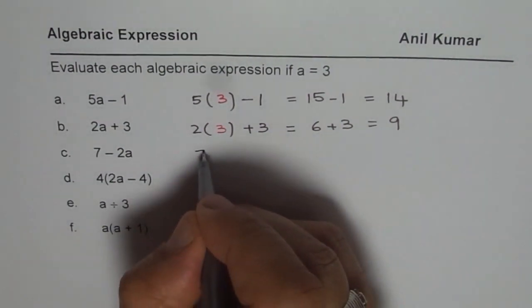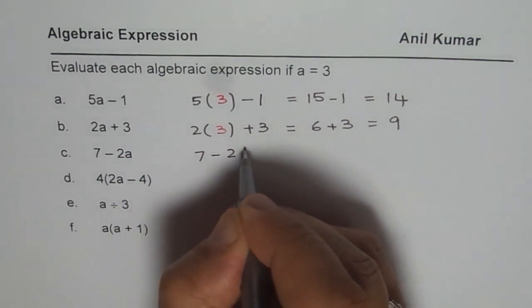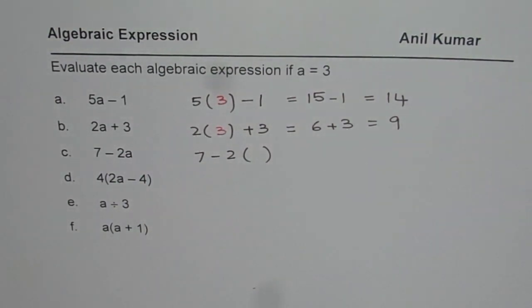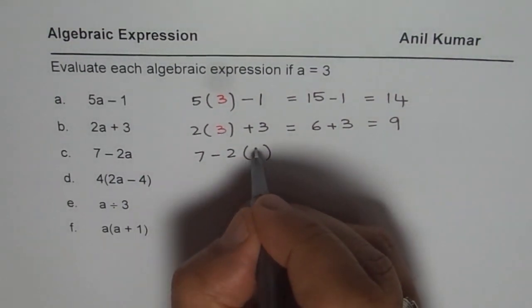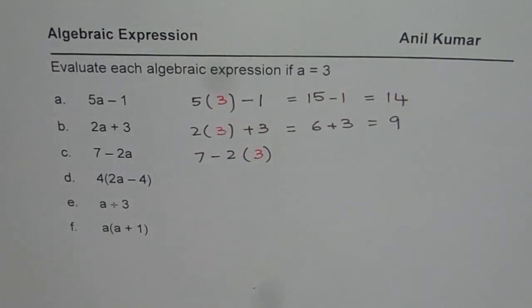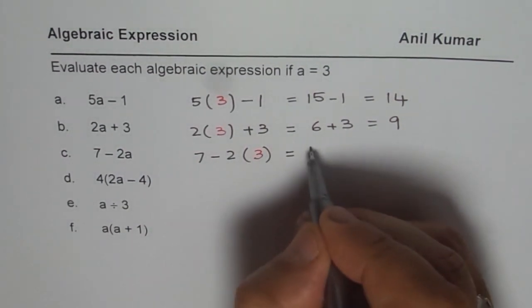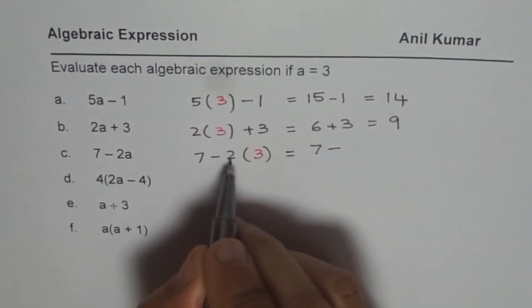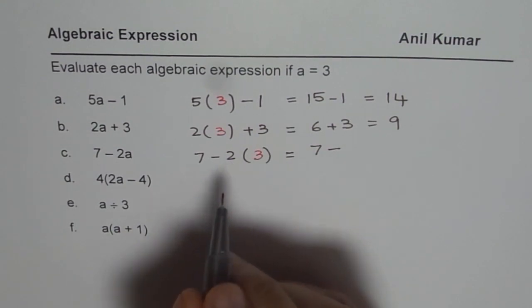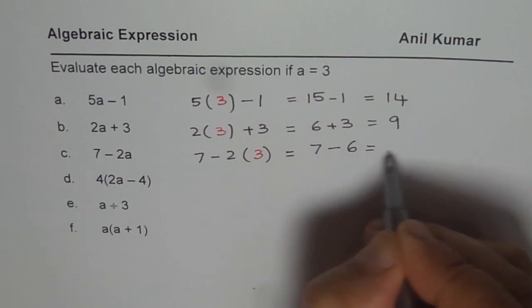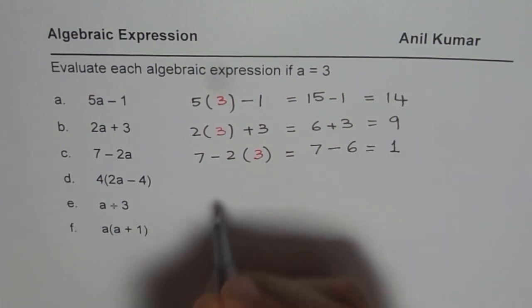The next one is 7 minus 2 times a. What is a? a is 3 for us. So we write 3 here. Now let's evaluate for a equals 3. We have 7 minus... you have to first multiply. Do not do 7 minus 2, that would be wrong. Remember order of operations. 2 times 3 is 6. 7 minus 6 is 1, so that is the answer.